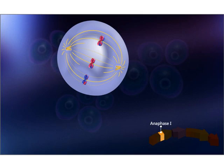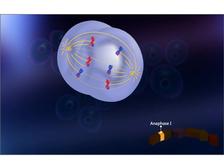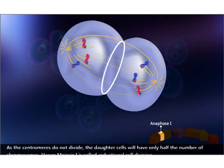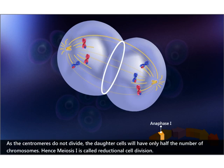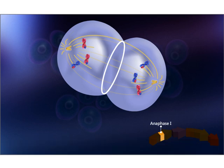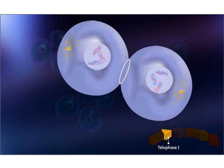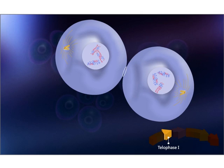In anaphase one, the homologous chromosomes are pulled to opposite poles of the cell. In between the two sets, interzonal fibers are formed. As the centromeres do not divide, the daughter cells will have only half the number of chromosomes. Hence, meiosis one is called reductional cell division. Meiosis one ends with telophase one, when the nucleolus and nuclear membrane reappear and chromosomes again change to chromatin network, forming two daughter nuclei.